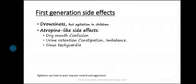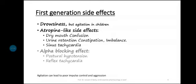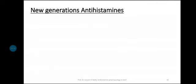Atropine-like side effects include dry mouth — important for dental hygiene — urinary retention, constipation, and sinus tachycardia. Alpha-blocking effects lead to postural hypotension. A common side effect of alpha-blocker drugs is postural hypotension, which causes reflex tachycardia. These are the first generation side effects.